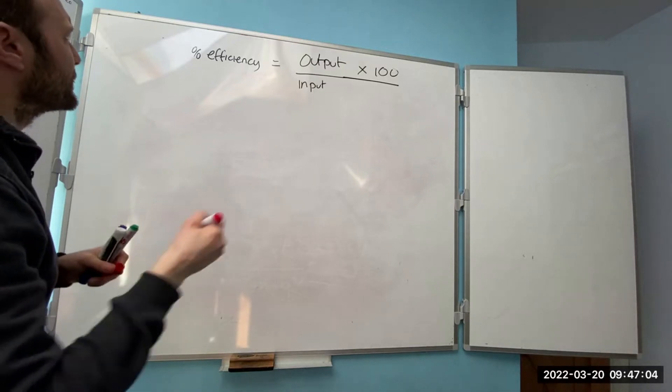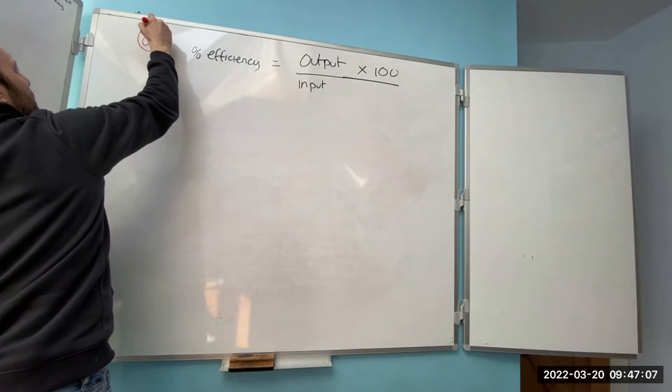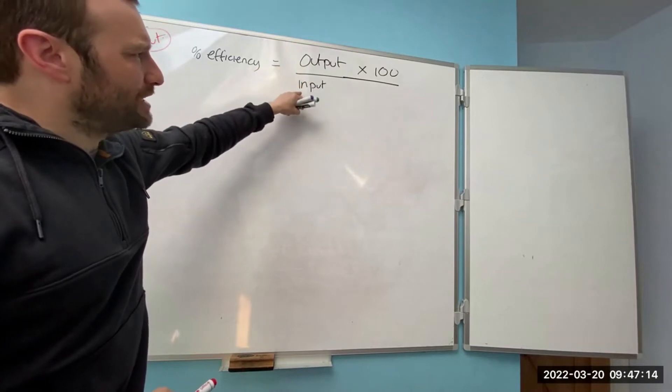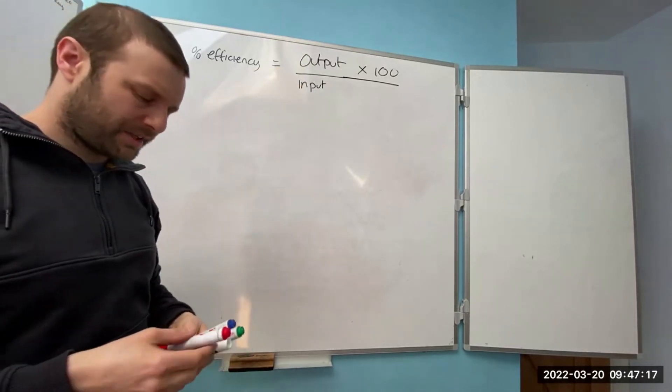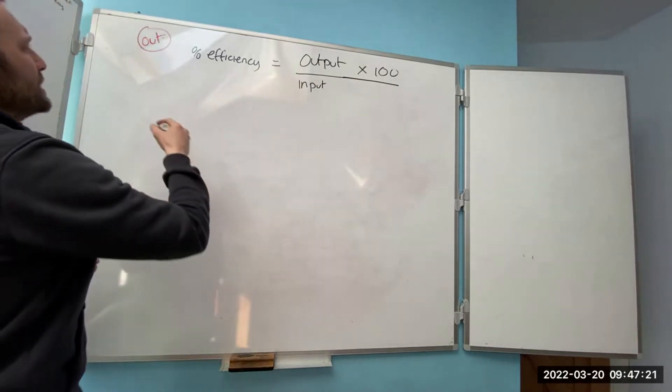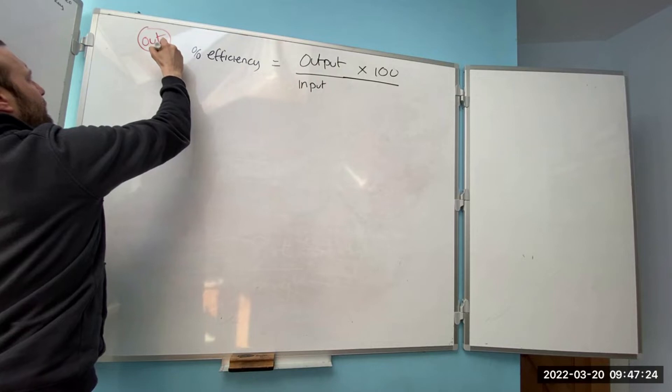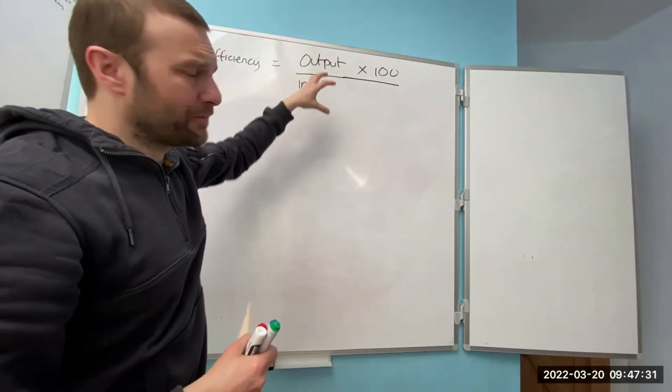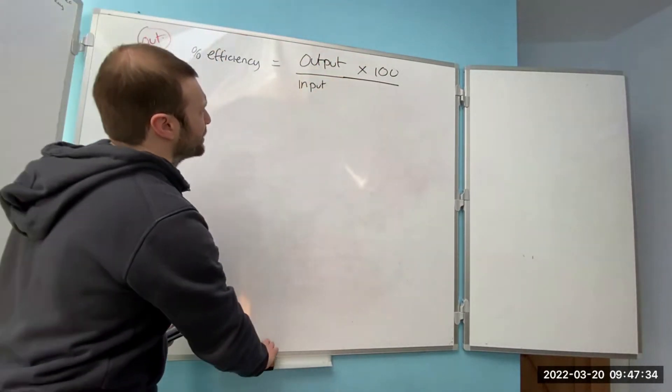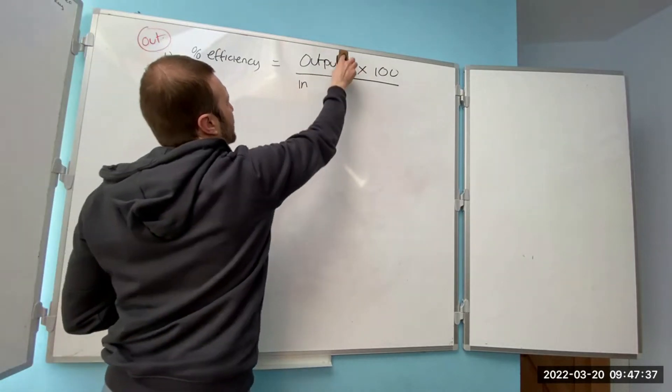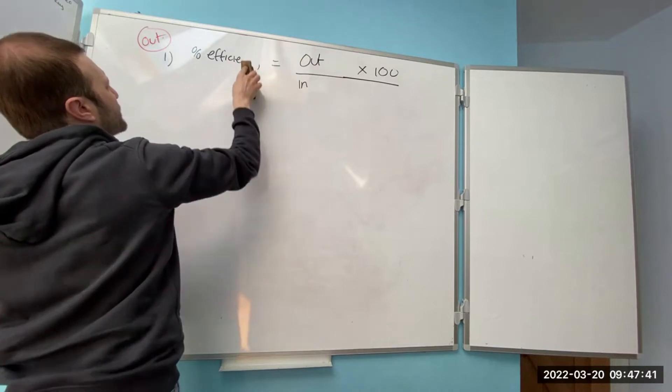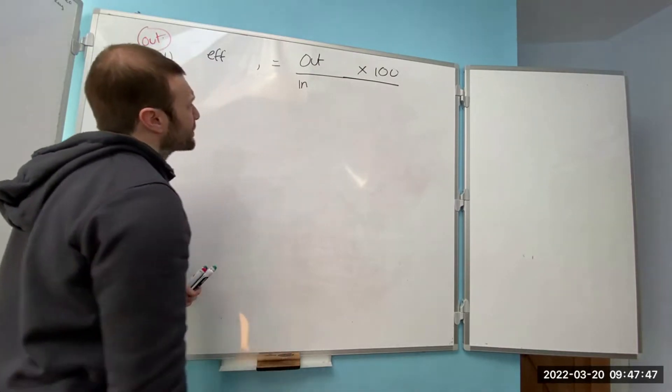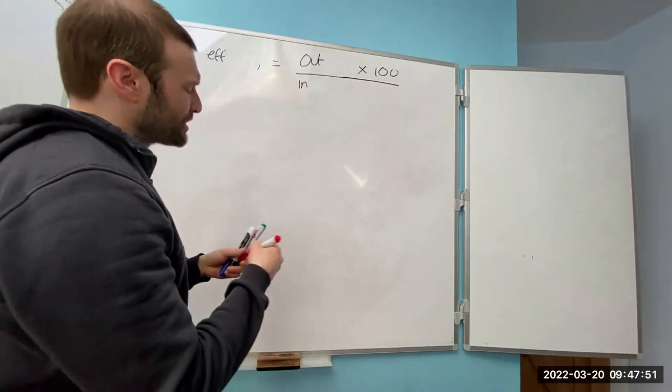But we're looking for output. Purely for ease, save me writing out efficiency, output, input, I'm just going to use out for output, in for input and EFF for efficiency. So step one, we're looking for output. I can't do anything with that formula until I've removed the input. We know it's a percentage, so we don't need that. I need to times the input out because that's the opposite of divide.